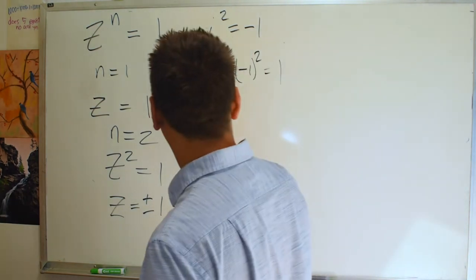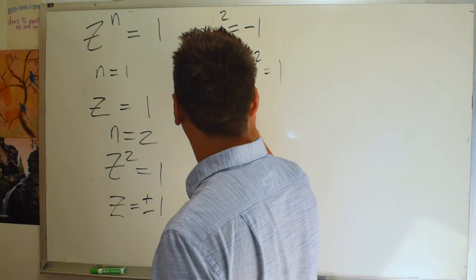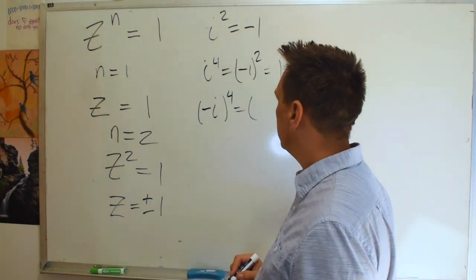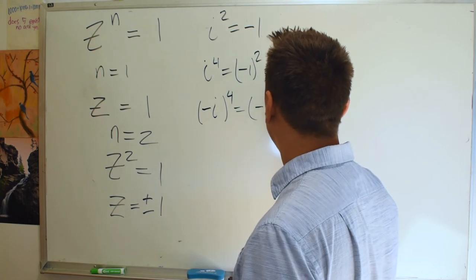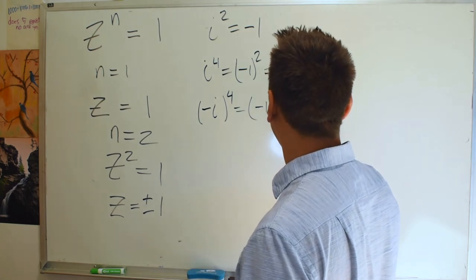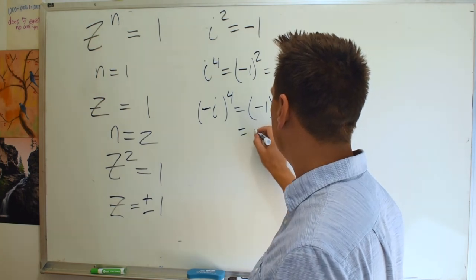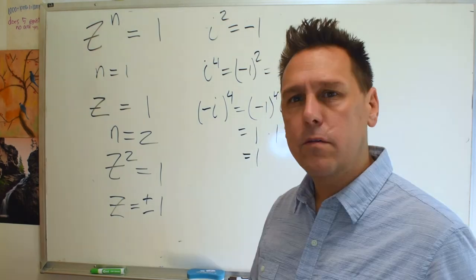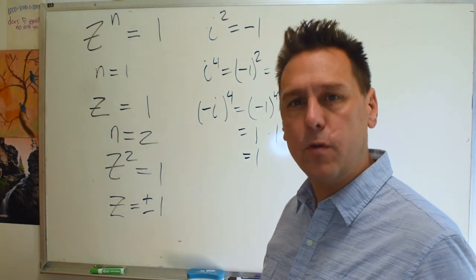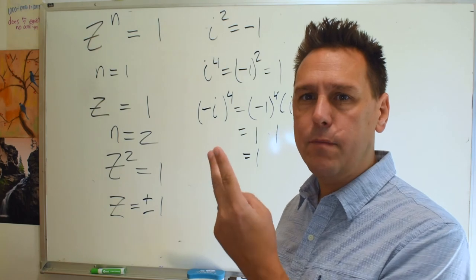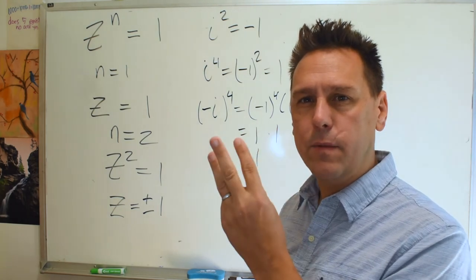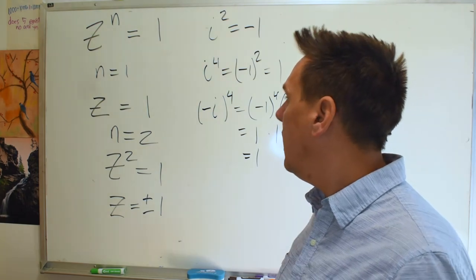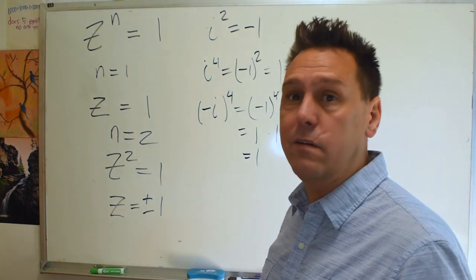More than that, minus i. We raise that to the fourth power. How do you want to do this? We could separate it out. Minus one to the fourth times i to the fourth. And so minus one to the fourth is one times one. Sure enough that's one too. For n equals four, for the fourth roots of unity, we have i minus i minus one and one.